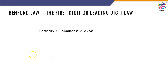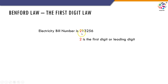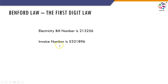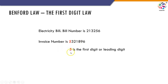If you are still unclear about what the first digit is, let me explain with an example. The electricity bill number I am considering is 213256. The first digit in this is 2 — it can also be called the leading digit. Let's look at one more example: invoice number 5321896. The first digit or leading digit in this is 5. That's how we find the leading digit for each number in our dataset, do a frequency distribution, and compare it against what Benford suggests.